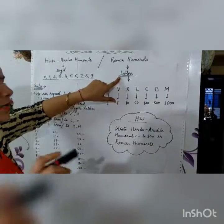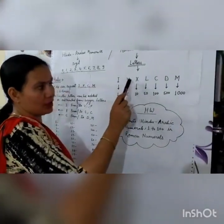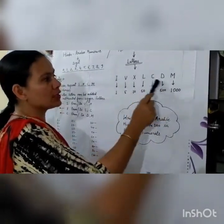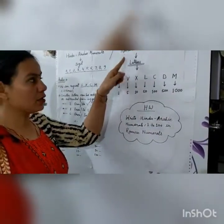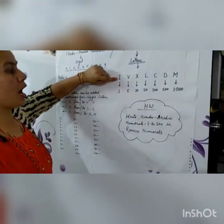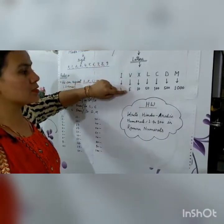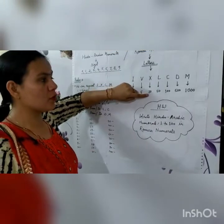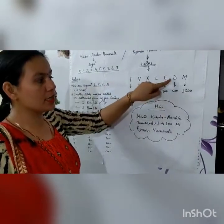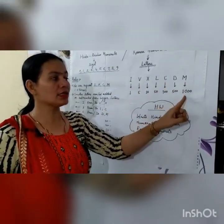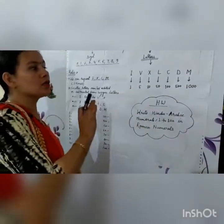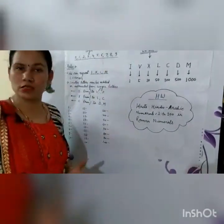Which letters? There are certain letters: I, V, X, L, C, D, and M. We use only these letters to form the Roman numerals. These letters have some specific values — I stands for 1, V stands for 5, X stands for 10, L stands for 50, C stands for 100, D stands for 500, and M stands for 1000. There is no letter in Roman numerals for 0.